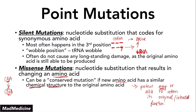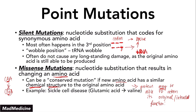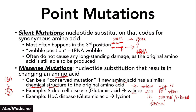We can see this in real-life examples you need to know well. The first example is sickle cell disease. In sickle cell disease, you have a missense mutation that causes the original glutamic acid to change into valine. You also have hemoglobin C disease, where the missense mutation causes glutamic acid to change into lysine. Depending on the change that occurs, you will get a certain type of hemoglobin structure and red blood cell, determining the condition — this is very high yield.